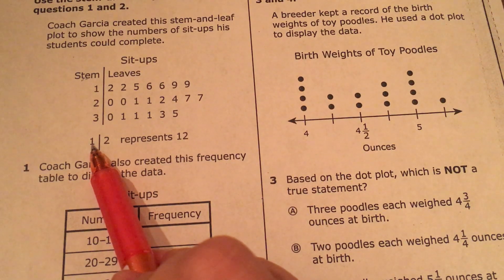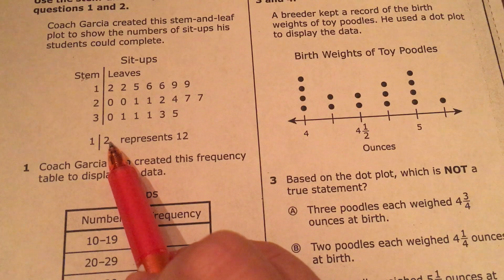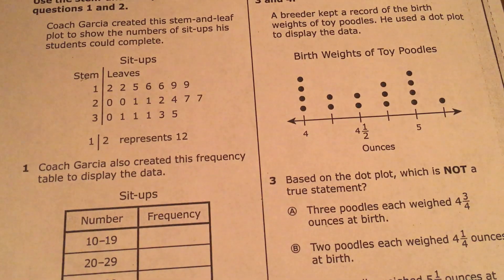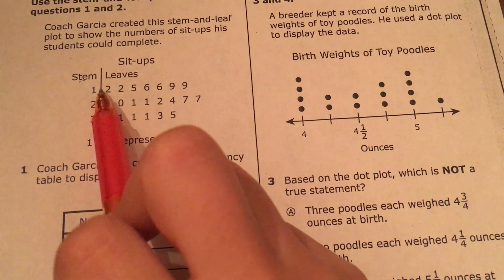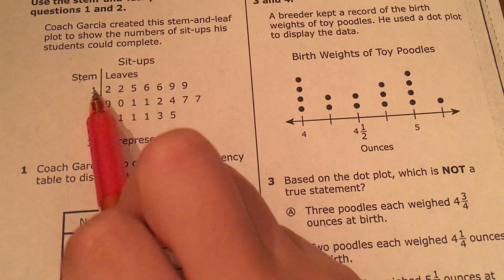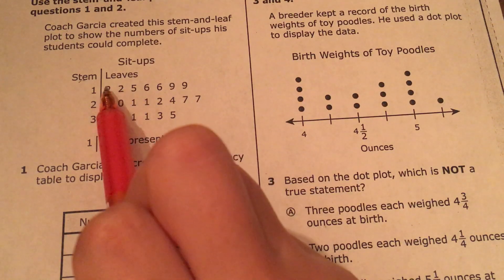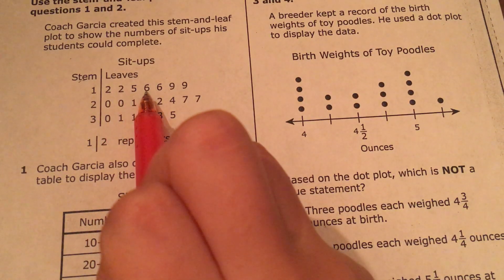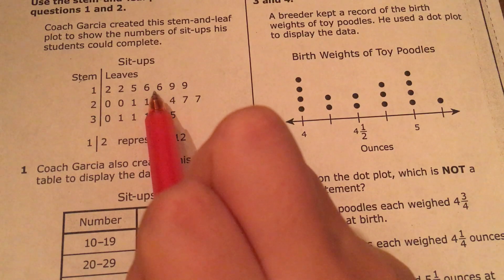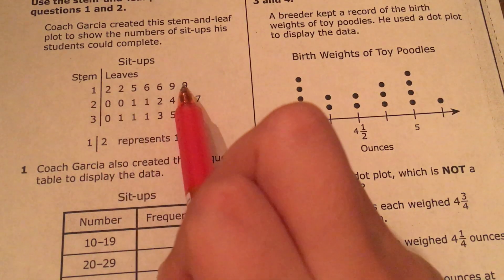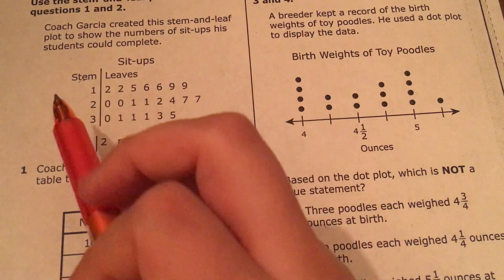Okay, so because I have a 1 here, that's 10, and then this is 2, so 10 plus 2 is 12. Okay? So up here I have 12, 12, 15, 16, 16, 19, 19.